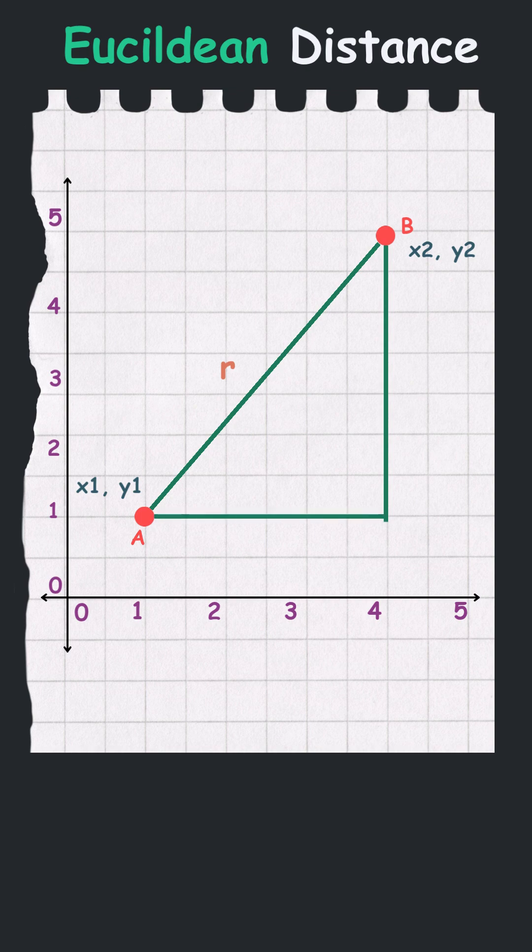We will call the point where these two lines intersect C. And just like that, we have formed a right-angled triangle with points A, B, and C.